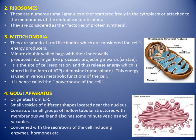The Golgi apparatus originates from the endoplasmic reticulum. It consists of small groups of hollow tubular structures with membranous walls, along with minute vesicles and vacuoles located near the nucleus. It is concerned with secretion of the cell, including enzymes and hormones.